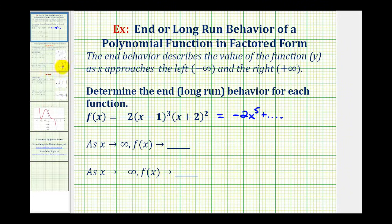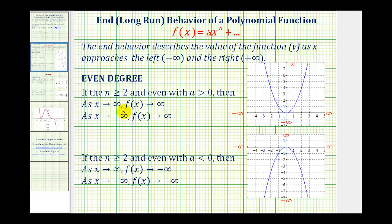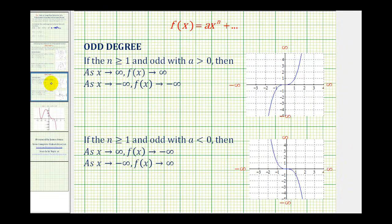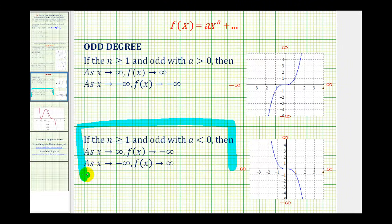For a quick review: if the degree is even and the leading coefficient is positive, this would be the end behavior. If the degree is even and the leading coefficient is negative, this would be the end behavior. And in our case, when the degree is odd and the leading coefficient is positive, this would be the end behavior. And if it's negative, this would be the end behavior. So in our case, this would be the end behavior for our polynomial function.